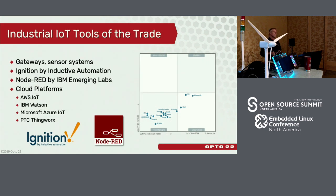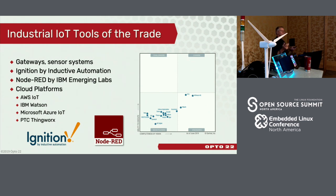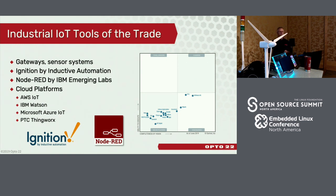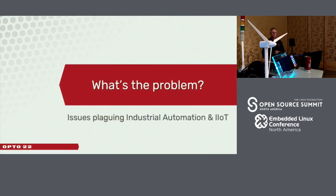Some of the industrial IoT trade tools are gateways, sensor systems, firewalls, and related items. There's also a big software aspect, represented by tools like Node-RED — which is part of the Linux Foundation — as well as Ignition software. And of course, cloud platforms. If you have anything to do with IoT, you've probably heard about the various cloud platforms from Microsoft, IBM, Amazon, and so on.